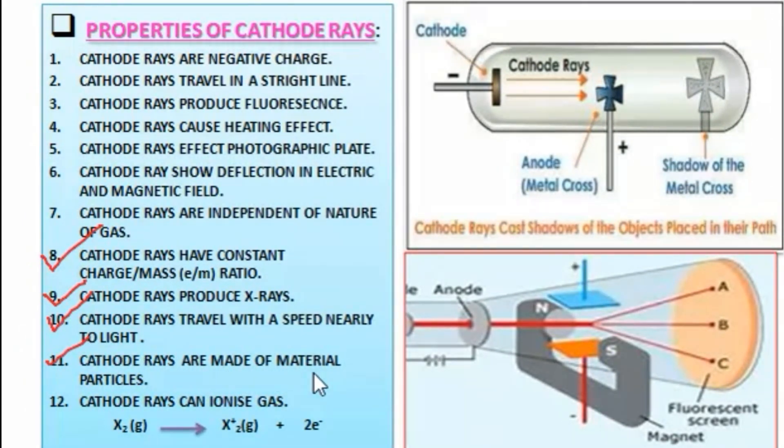Number 11: cathode rays are made of material particles. What does this mean? It means when cathode rays strike a paddle wheel placed in their path, they tend to move the blades of the wheel. This indicates that cathode rays have mass and kinetic energy. When the cathode ray passes and strikes a wheel paddle placed in the path, it moves the blades of the wheel. That means it has some mass that helps to move the paddles.